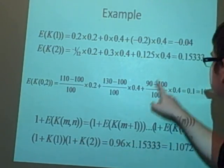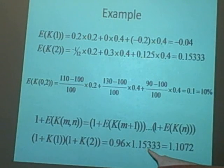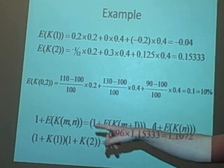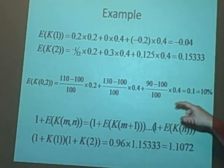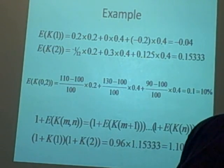This times 1 plus this gives us 1.15333, and if we multiply them we get 1.1072. As you can see, this value is not equal to 1 plus the expected value here, which isn't equal to 1.1, so it doesn't work like that. But I think it's interesting just to look at that. I hope that made sense.